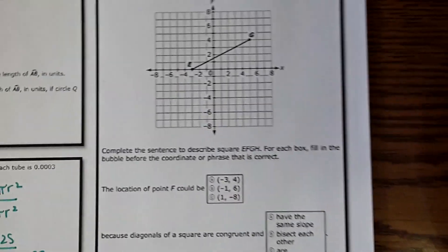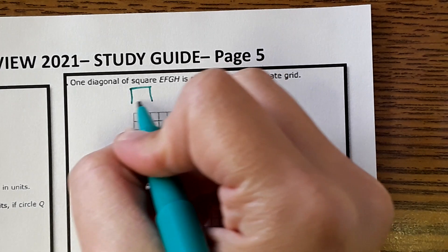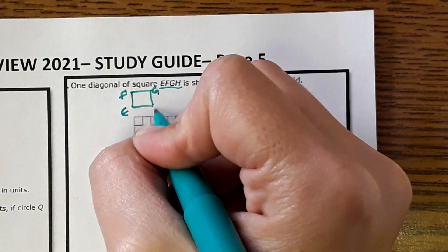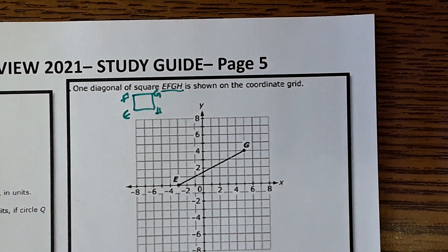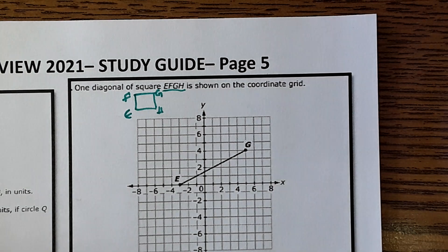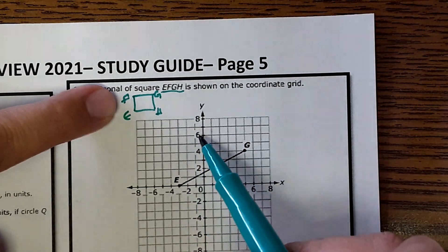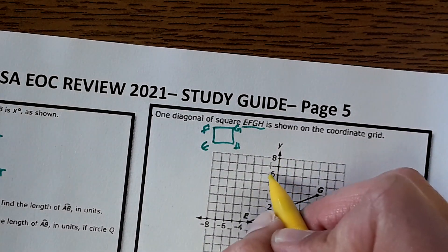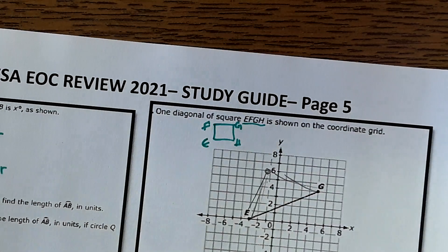Next one I find pretty simple. It says one diagonal square EFGH is shown. So square EFGH. So like this, a square. And remember that points of the square have to be in that order. So EFGH. Complete the sentence to describe square EFGH for each box. Fill in the bubble before the coordinate or phrase that is correct. The location of point F could be. Okay, so point F would be in between E and G up here. So just guessing, guesstimating where it would be. Like to make a square, it would probably have to be like around right here. So you could like all the sides would be the same measure-ish.